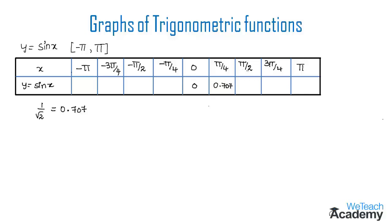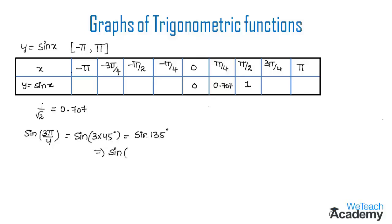For x equal to pi by 2, we get sine pi by 2, which equals 1. For x equal to 3pi by 4, we get sine 3pi by 4, which equals sine 135 degrees. This can be written as sine (90 plus 45 degrees), which is in the form sine(90 + θ) equal to cos θ, giving us cos 45 equal to 1 by root 2, approximately 0.707. For x equal to pi, sine 180 degrees equals 0.